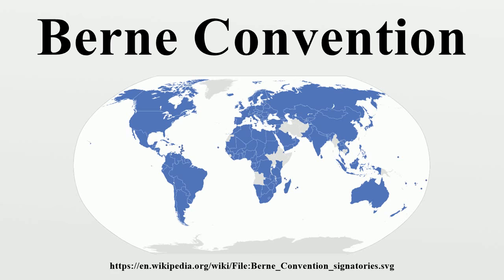If the author is unknown, because for example the author was deliberately anonymous or worked under a pseudonym, the convention provides for a term of 50 years after publication. However, if the identity of the author becomes known, the copyright term for known authors applies. Although the Berne Convention states that the copyright law of the country where copyright is claimed shall be applied, Article 7 states that, unless the legislation of that country otherwise provides, the term shall not exceed the term fixed in the country of origin of the work — i.e., an author is normally not entitled to a longer copyright abroad than at home, even if the laws abroad give a longer term. This is commonly known as the rule of the shorter term.